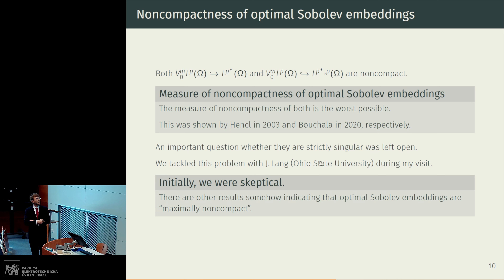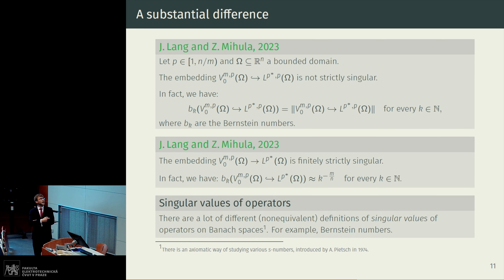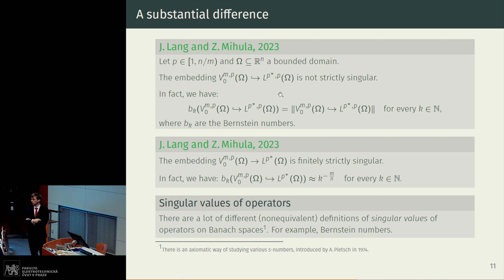We decided to solve this problem with Lang from Ohio State University while I was visiting him two years ago. Initially we were skeptical, because some other results indicate that non-compact optimal Sobolev-Lebesgue embeddings are always maximally non-compact. Nevertheless, to our own surprise and after a lot of work, we were able to show that there is a substantial difference between these two embeddings. Whereas the optimal Sobolev-Lorentz embedding is not strictly singular, the optimal Sobolev-Lebesgue embedding is not only strictly singular, but in fact finitely strictly singular.